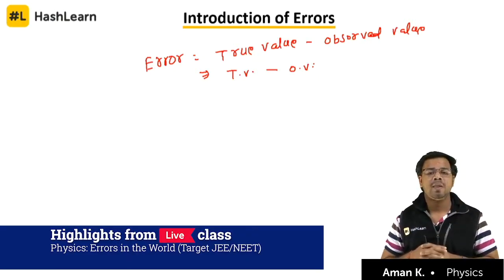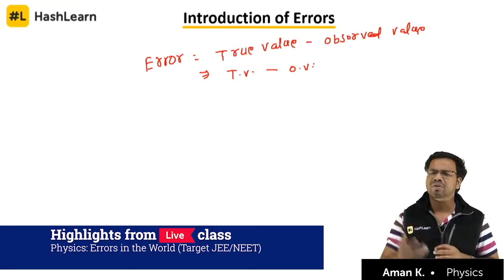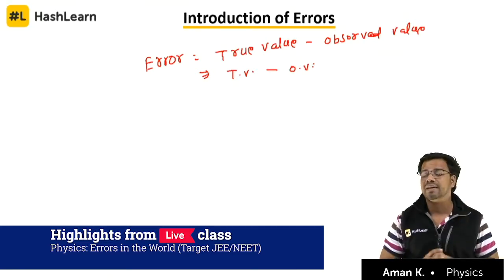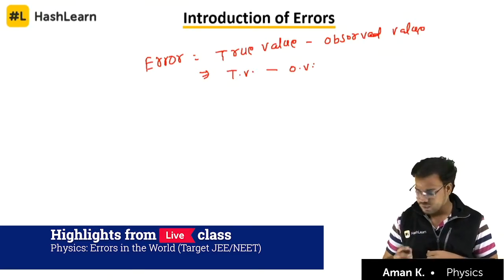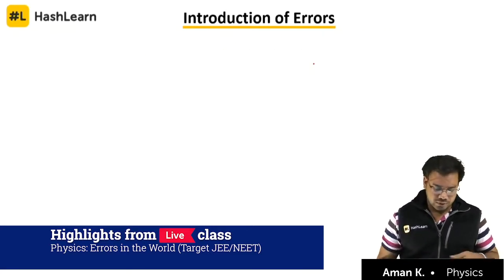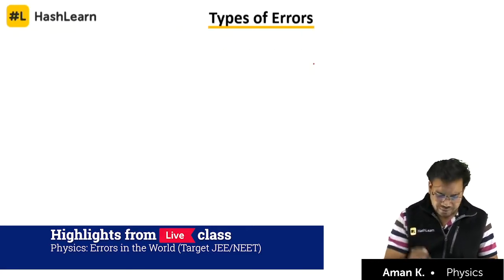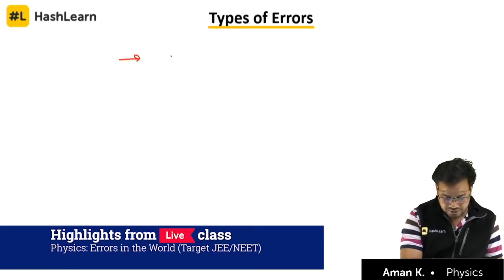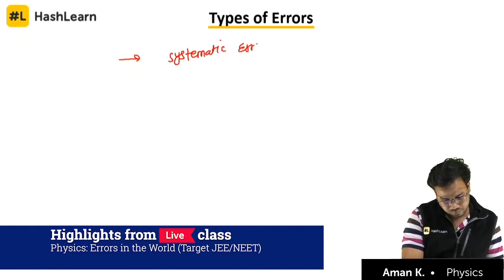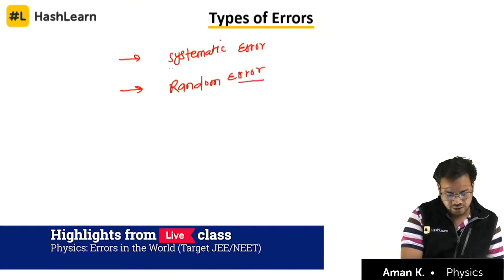There are two types of error: systematic error and random error. Types of error — how many types? There are two types: first one is systematic error and second one is random error.